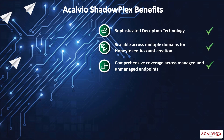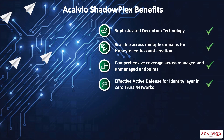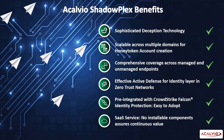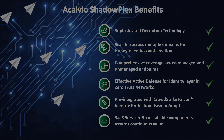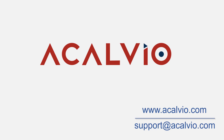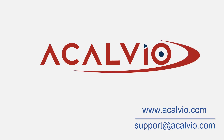Identity protection is central to zero-trust architectures, and Acalvio adds an effective active defense layer to zero-trust networks. Acalvio is pre-integrated with CrowdStrike Falcon identity protection and is a completely automated solution, making it very easy to adopt — a SaaS service for continuous value with no components to install on the enterprise network. Start your free trial for enhanced identity protection using honey token accounts and honey tokens directly from the CrowdStrike store.